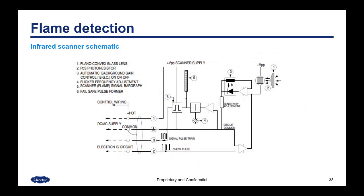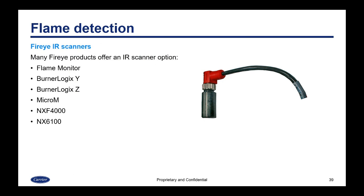Here's a schematic of an infrared scanner showing the wiring as well as where the flame comes in and the physical manifestation of the flame scanning. Many FireEye products offer an infrared scanner option, including the Flame Monitor, BurnerLogix Y and Z, MicroM, as well as the NXF4000 and NX6100.